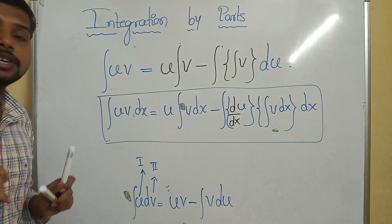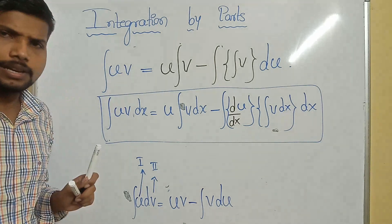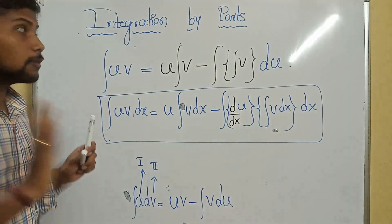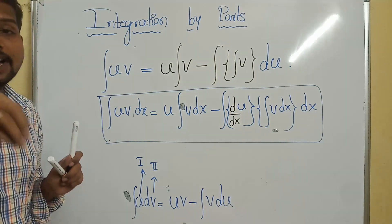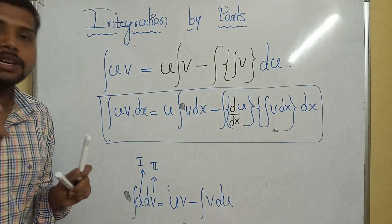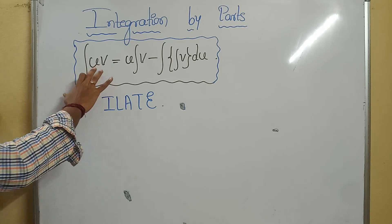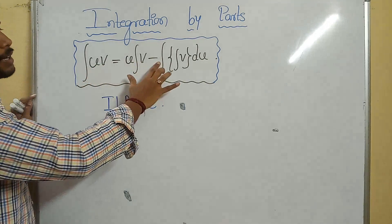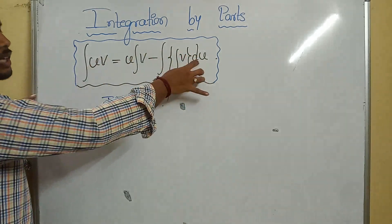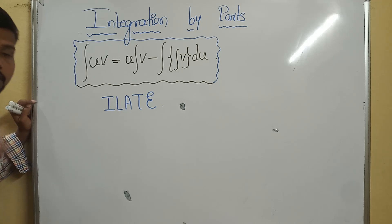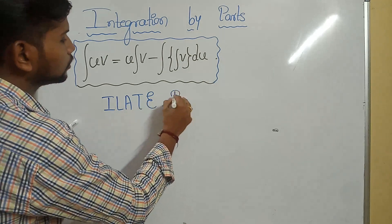In integration by parts, we need to decide how to select the first and second terms. In derivatives it was flexible — you could take any function — but to make the problem simple in integration by parts, we use a rule called the ILATE rule. The first and second functions will be decided by this ILATE rule.